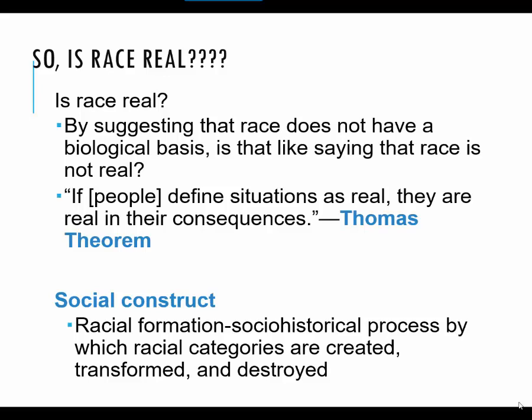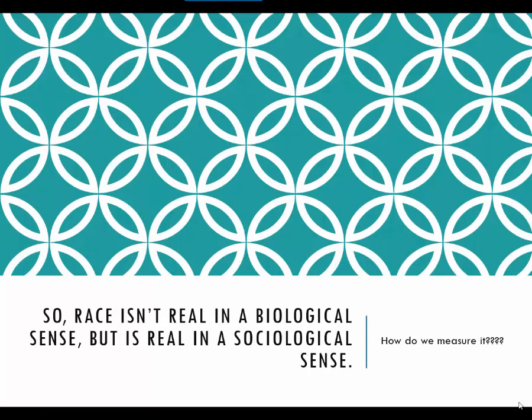Before I leave social construct: specifically for race, we call this process racial formation, and this is the socio-historical process by which racial categories are created, transformed, and destroyed. Because race is not real in an objective sense, who we classify as what race has shifted and changed over time and will probably continue to shift and change over time, until maybe we reach that day where race is no longer considered a sociologically significant idea.